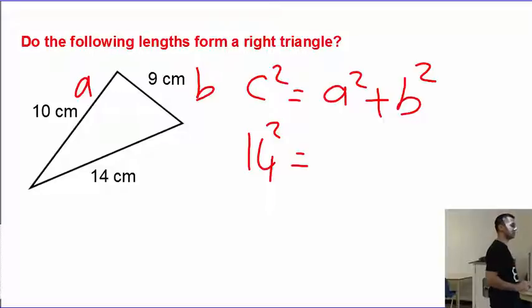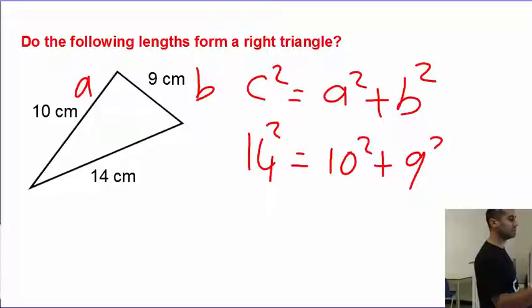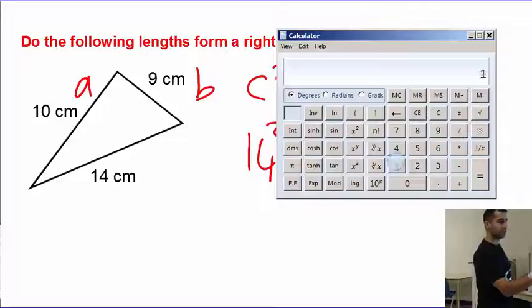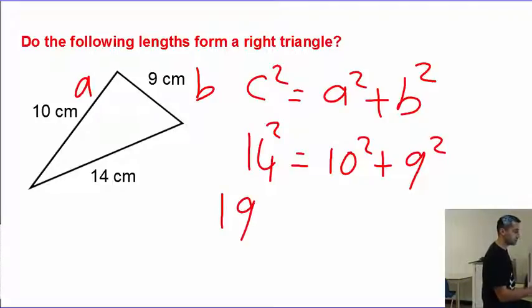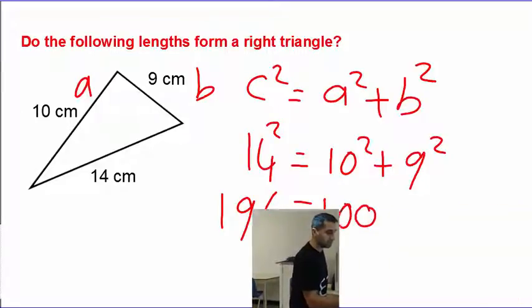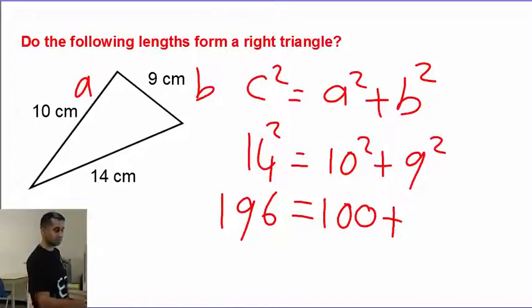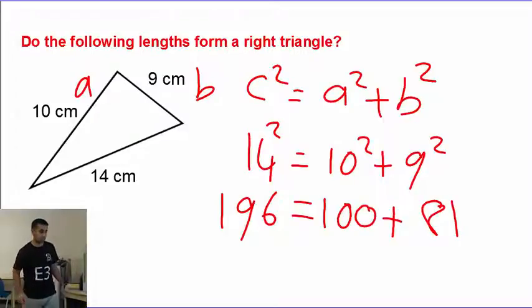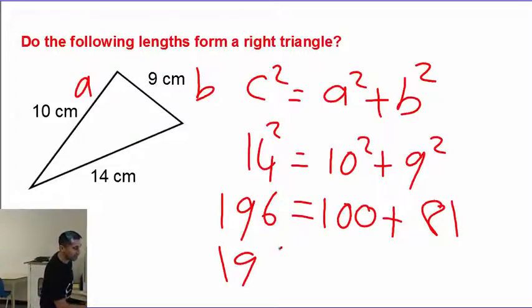So, 10 squared plus 9 squared. So, 14 squared is 196. Let's write that. On the left, I have 196. On the right, 100 plus 81 will give me 181.